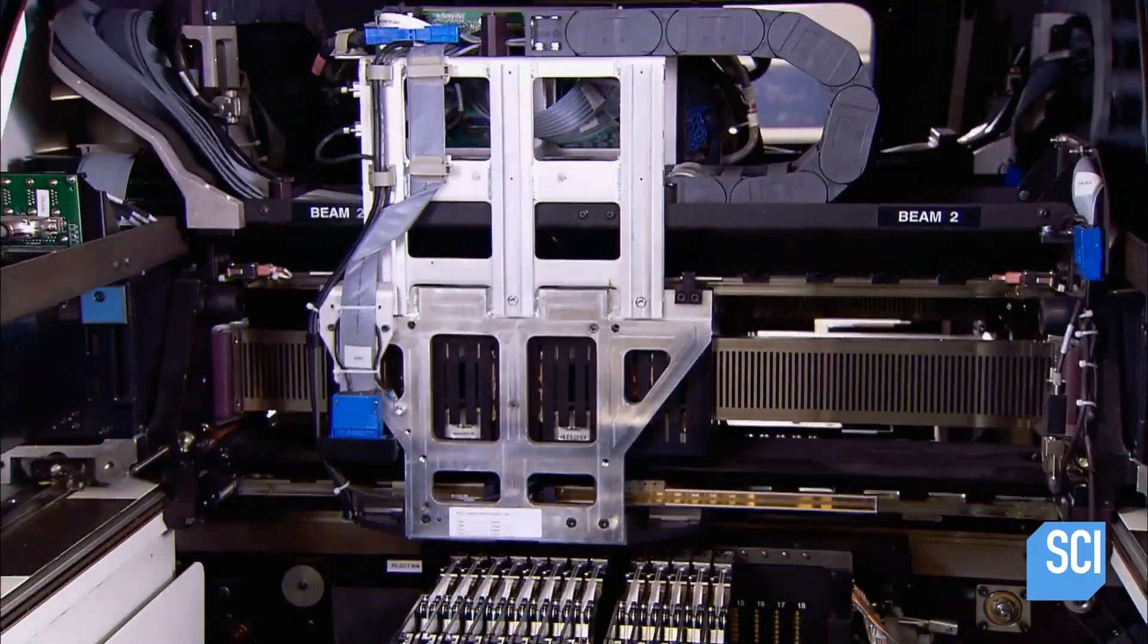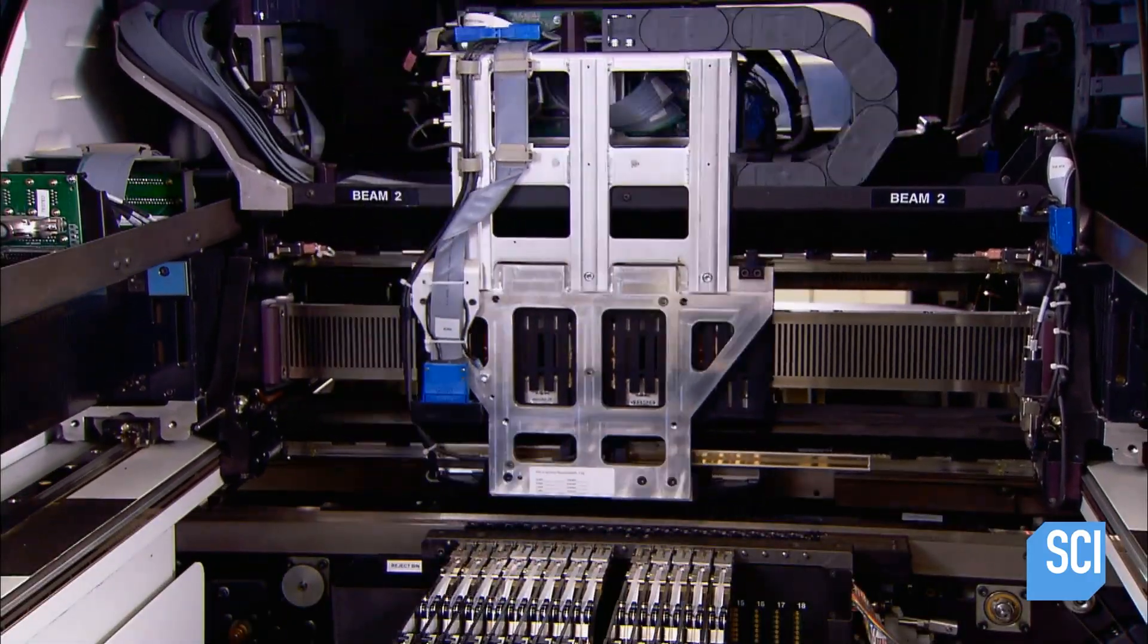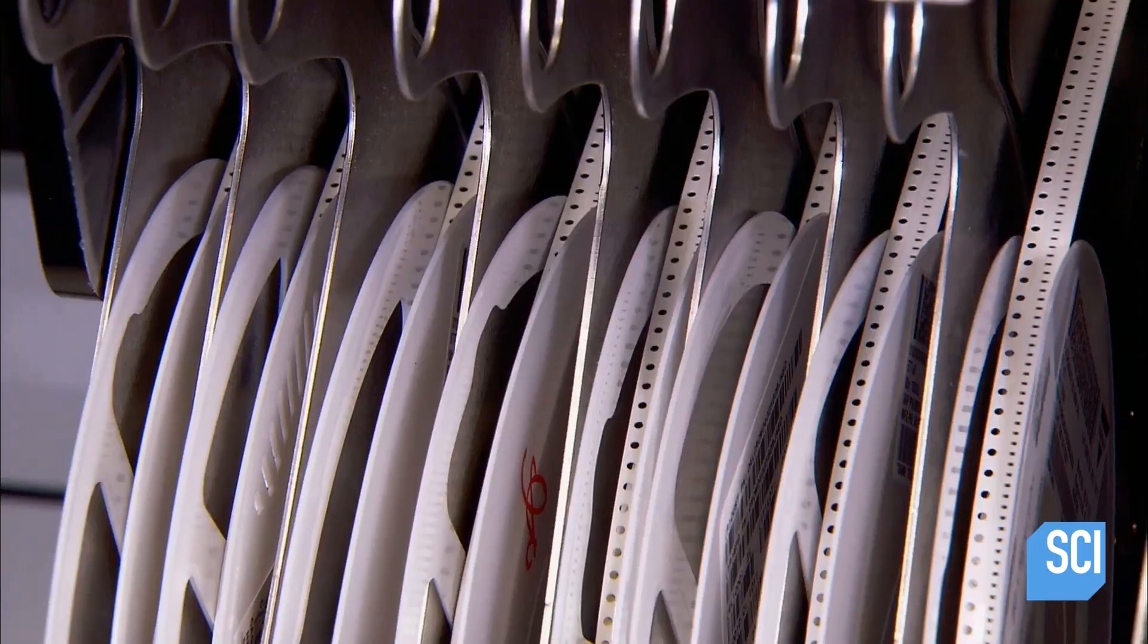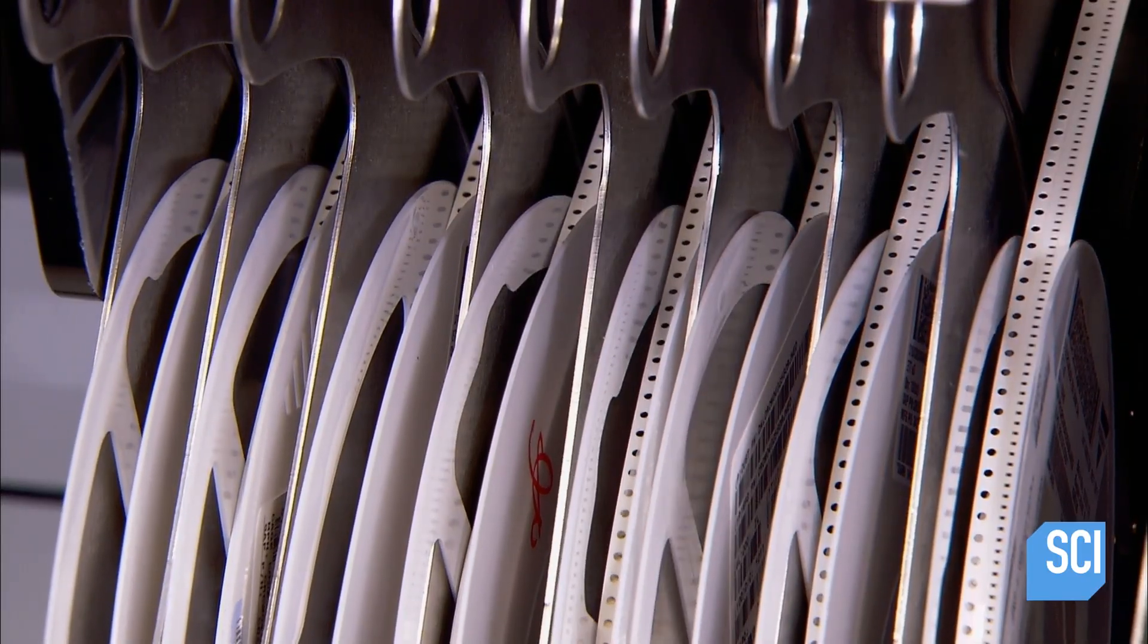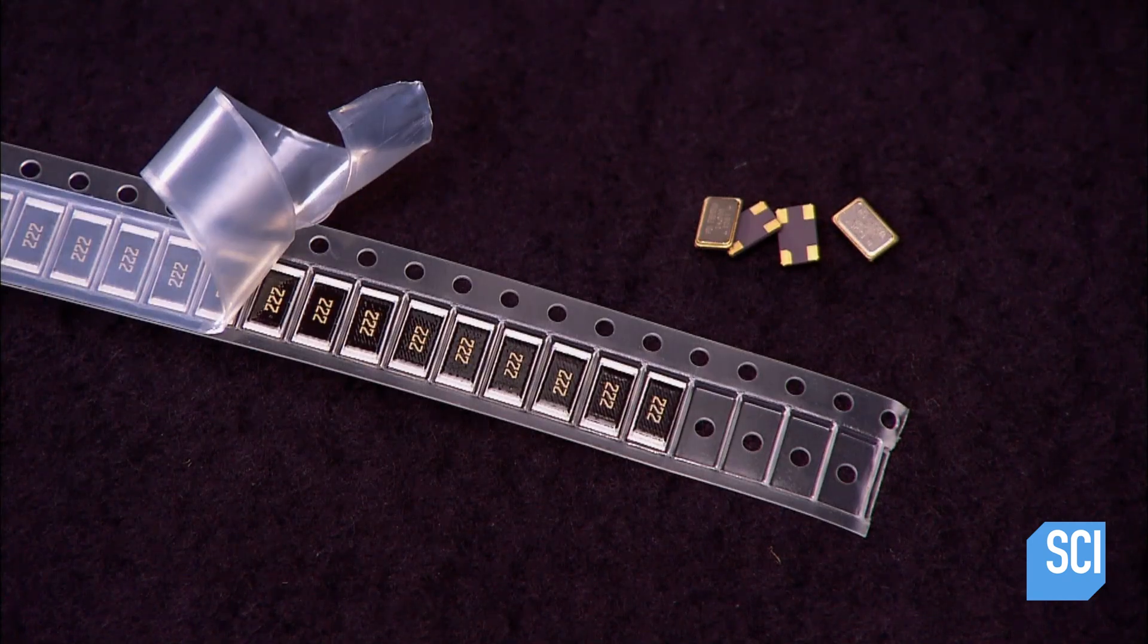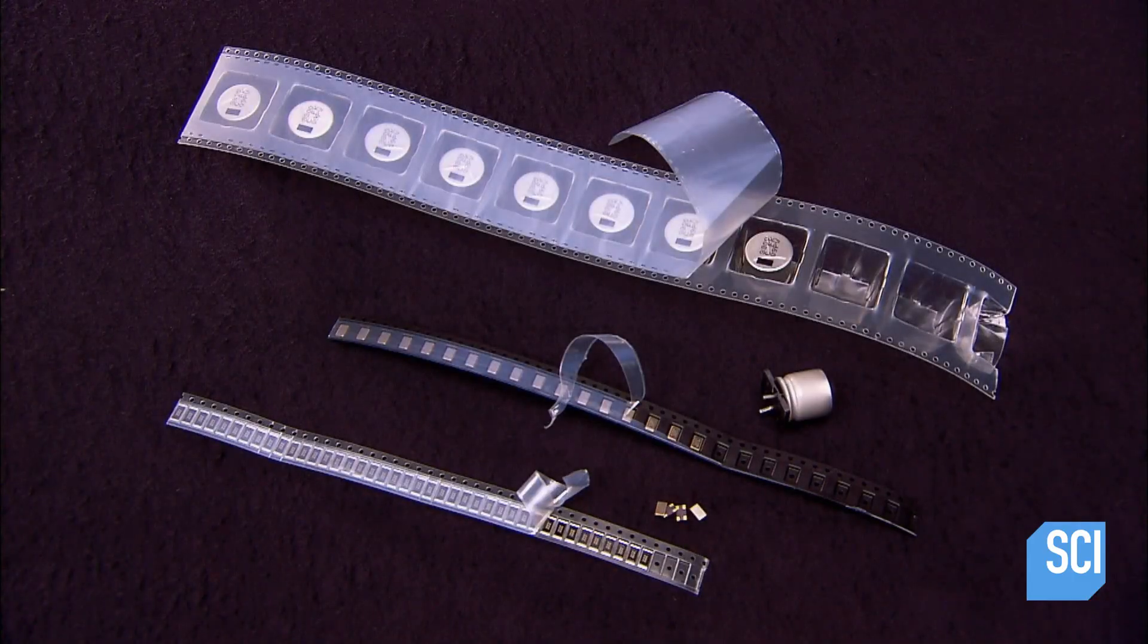Workers mount the reel for each component on what's known as a pick-and-place machine. This computer-controlled high-speed device peels back the protective strip and picks the required parts off each reel, then places them in their designated solder pasted position on the board.